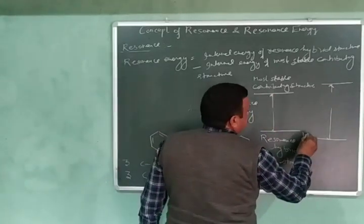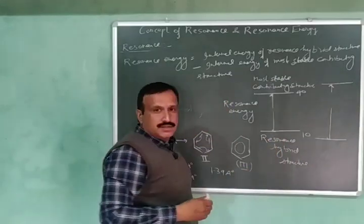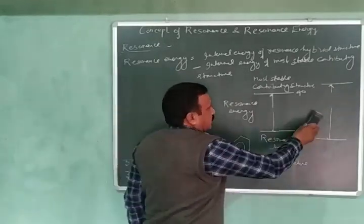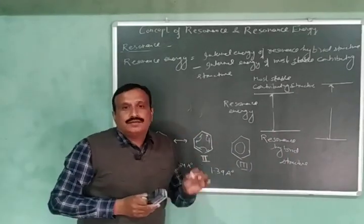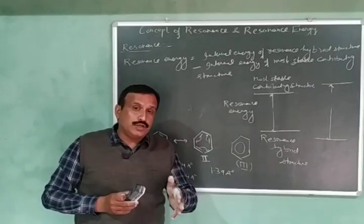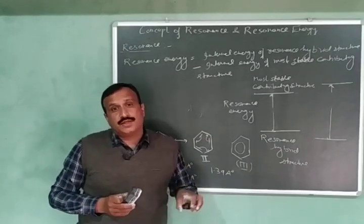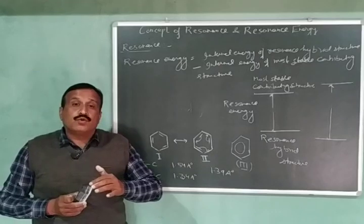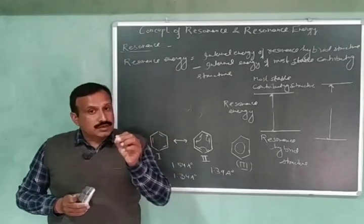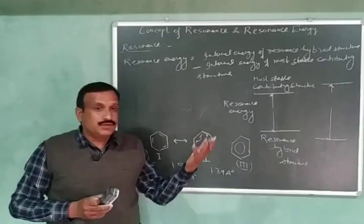In this way, we can calculate the resonance energy. However, the absolute value of the internal energy of any compound or structure cannot be determined directly. So this resonance energy is calculated indirectly from thermochemical data — specifically from the heats of hydrogenation or the heats of formation of the compounds. I will discuss this calculation of resonance energy from thermochemical data in my next video.